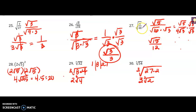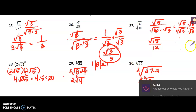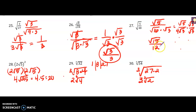Number 27: I simplified the square root of 48 by breaking it into 16 times 3; the square root of 16 is 4. So you have the square root of 5 over 4 square roots of 3. You again have to rationalize your denominator, so I multiplied by the square root of 3 over the square root of 3. That gave me the square root of 15 in the numerator. Down here, the square root of 3 times 3 is the square root of 9, which is just 3, and then you multiply that by the 4 to get 12.